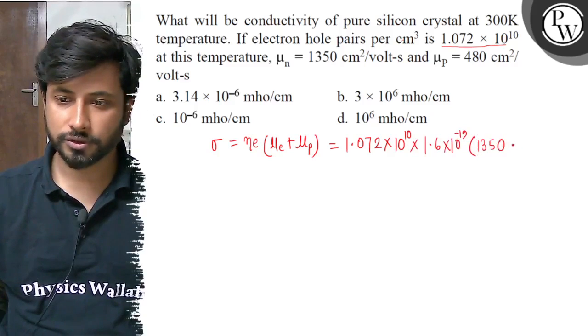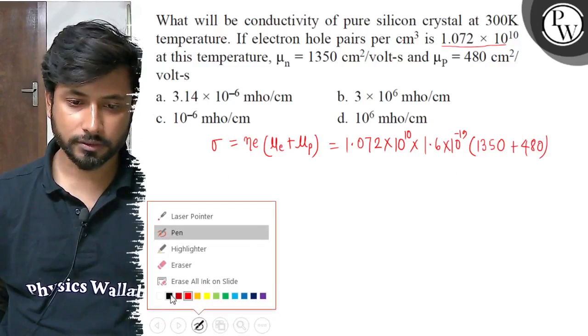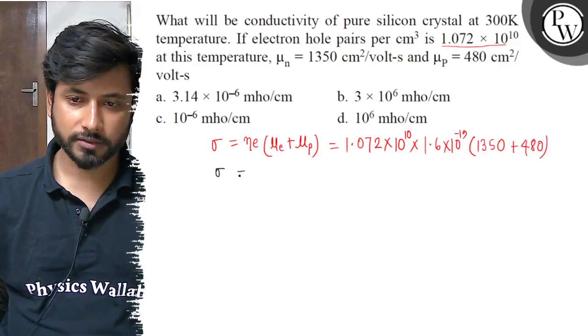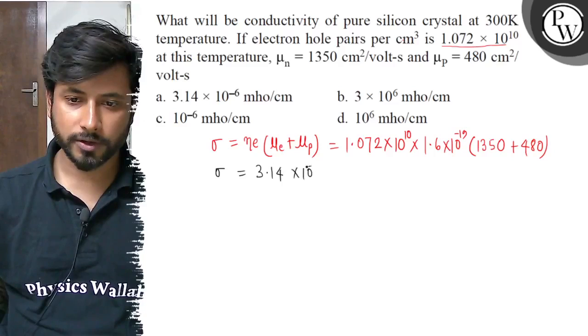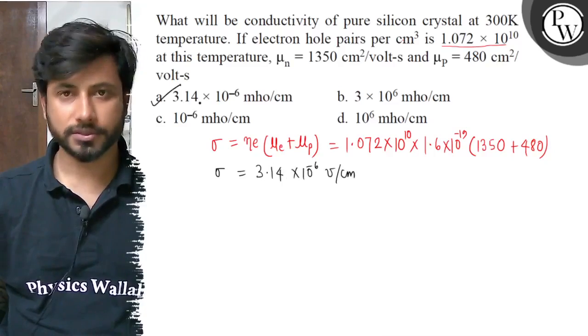1350 plus mu p is 480. When we add all these and multiply, we get conductivity almost 3.14 into 10 to the power minus 6 mho per centimeter. So final answer is option a. Best of luck. Thank you.